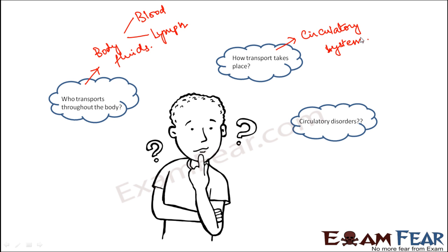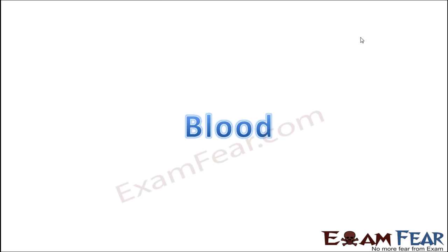Circulation is extremely important because if proper circulation does not take place, many parts of the body will remain deficient in essential substances. For example, if some part of the body is deficient in water, cells might dehydrate, having adverse effects on the entire individual. Any problem with the functioning of the circulatory system — whether with the body fluid or another component — can lead to circulatory disorders. We will discuss common circulatory disorders and their causes and symptoms.